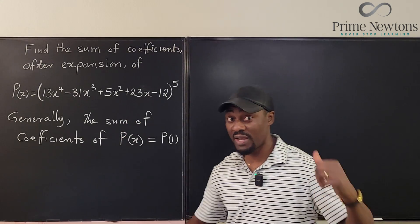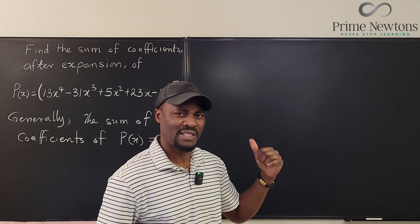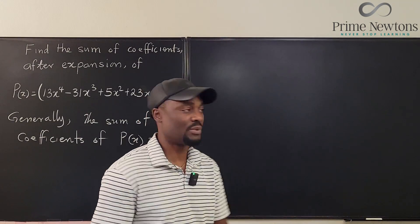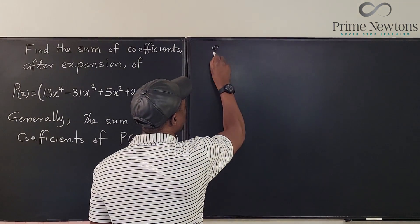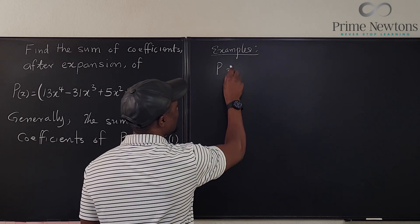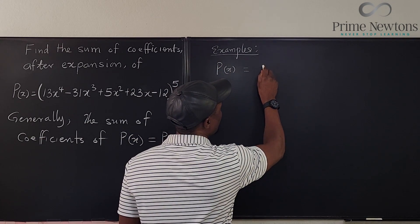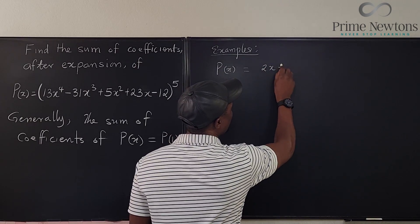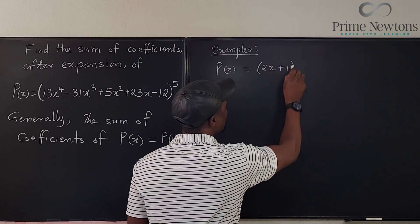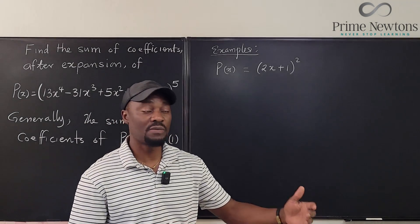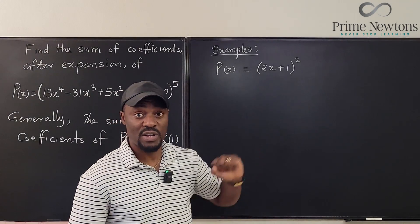Okay, you can do that while I explain to those who might be having doubts about it. So let's consider some very easy example. So for example, let's say I'm telling you that P of X is equal to 2X plus one, and I say it is raised to the power two. I just want to find what the sum of the coefficients are going to be after I expand this.